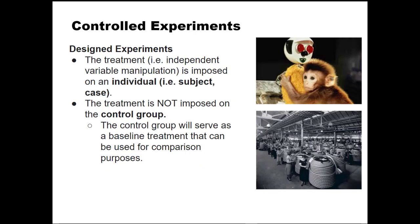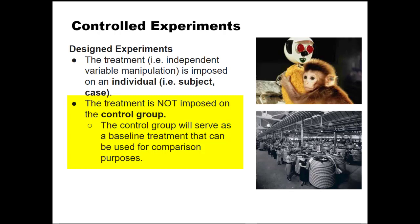When designing the experiment, the researcher has to decide if they're going to use a control. Will all individuals be given the treatment, or will only some receive a treatment while others do not? When individuals of a group are not given a treatment, this is called the control group. The control group serves as a baseline that can be used for comparison purposes — so you can see what would happen without the treatment versus with the treatment.